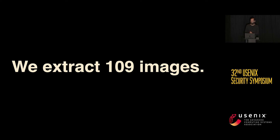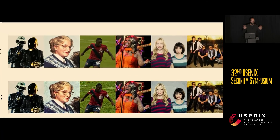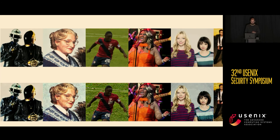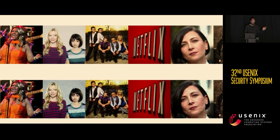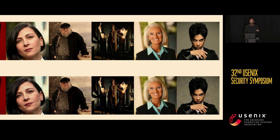We run our attack and extract roughly 109 images from the training dataset. These images are a very diverse set spanning the range of images you might want to see — lots of images of people, singers, actors, logos, album covers, and all kinds of interesting things. One interesting observation is that in many cases the L2 distance between the generated image and the training image is closer than the L2 distance between the original image and a JPEG-compressed version of that image — so we have almost pixel-perfect reconstruction in many cases.